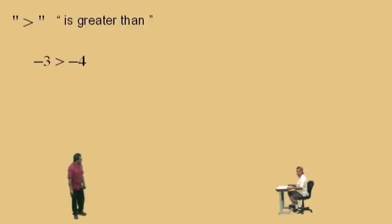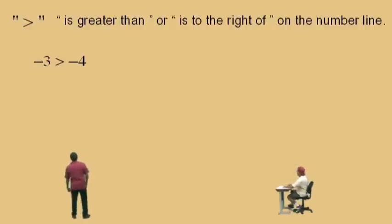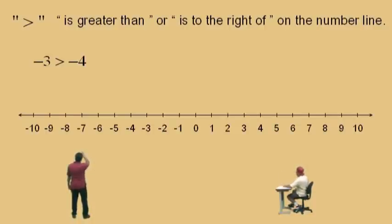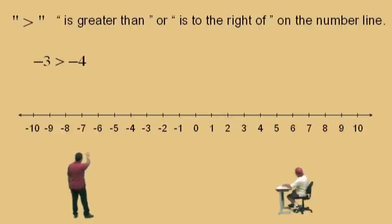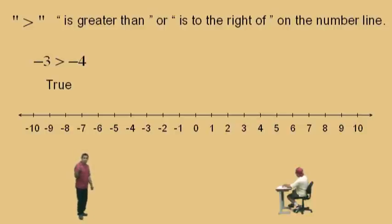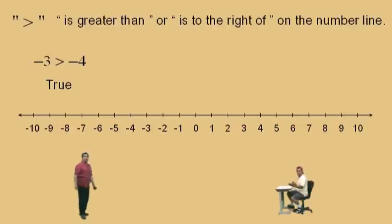How do you know which is the bigger number? Well, our approach will be to look at a number line. We're going to look at a number line here and realize a greater than symbol is actually saying 'is to the right of.' So if we look at this number line, Charlie, is negative 3 to the right of negative 4? Yes, it is. Therefore, negative 3 is greater than negative 4. Therefore, this statement right here is true. Let's do another one.